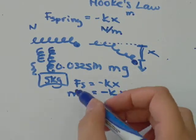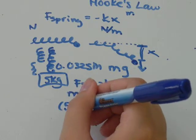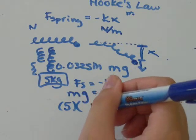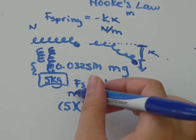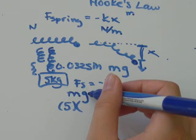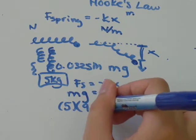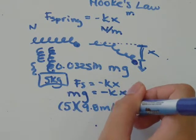Equals negative kx. The mass was 5 kgs. The force of gravity is always the acceleration due to gravity times the mass. So the acceleration due to gravity is 9.8 meters per second.